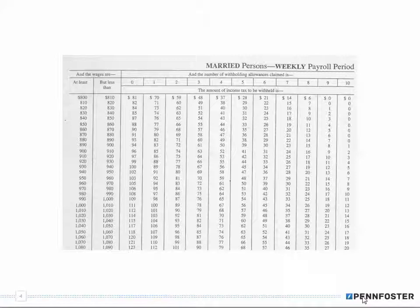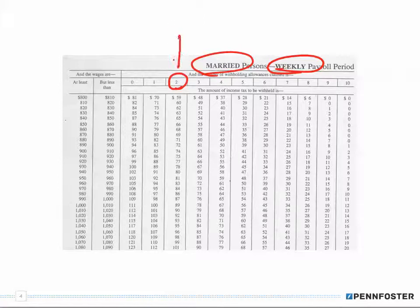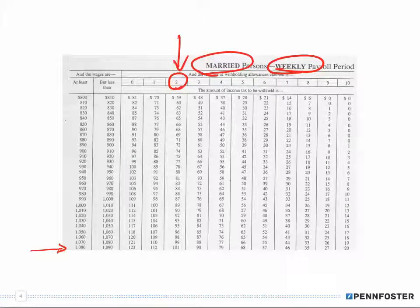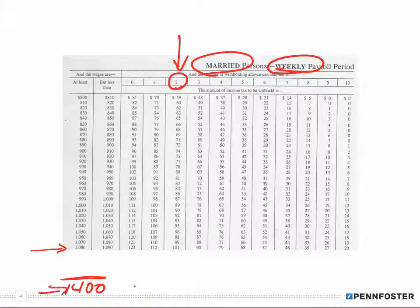Now let's look at the bracket method. We'd go to our Circular E and find the bracket chart for married and weekly. In this case she had two deductions, so we look at that allowance column. I took a partial of the table so you can see it only goes up to $1,080–$1,090 — it doesn't go all the way up to $2,000. The chart only goes up to $1,400. At the bottom it actually refers you to the percentage method — you must use the percentage method for any wage over $1,400.